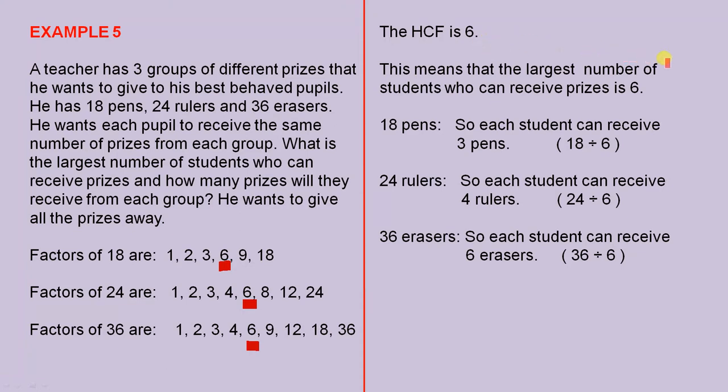What does that actually mean? This means that the largest number of students who can receive prizes is 6. So if there are 18 pens, each student can receive 3 pens, that's 18 divided by 6. There are 24 rulers, so each student can receive 4 rulers, 24 divided by 6. There are 36 erasers, so each student can receive 6 erasers, which is 36 divided by 6. So that's a very good real world application of the highest common factor.